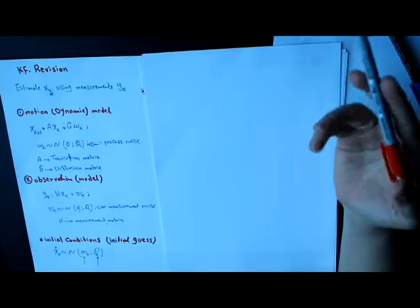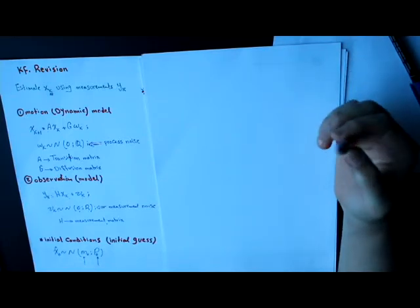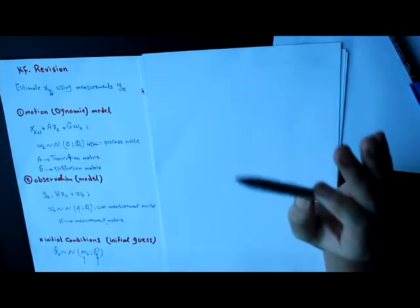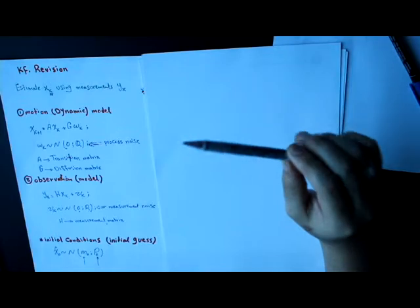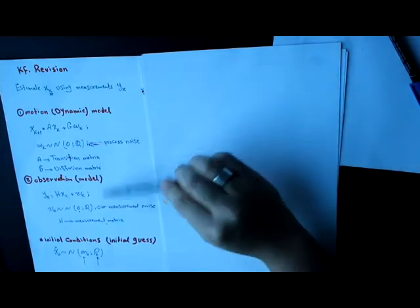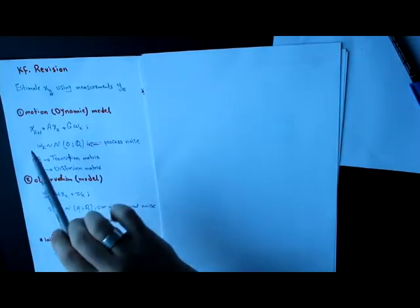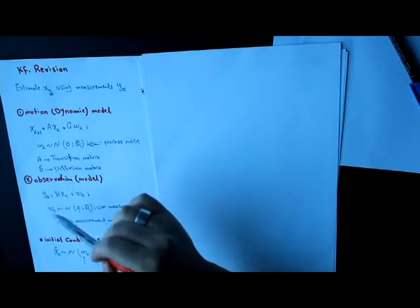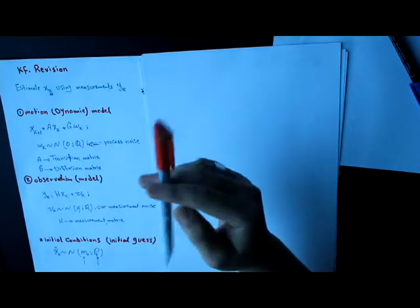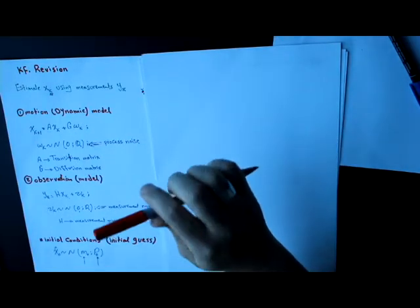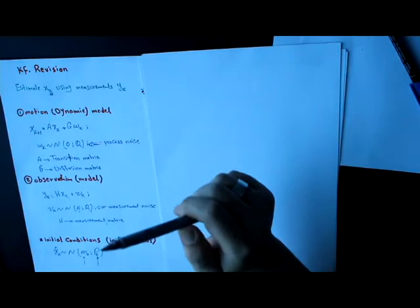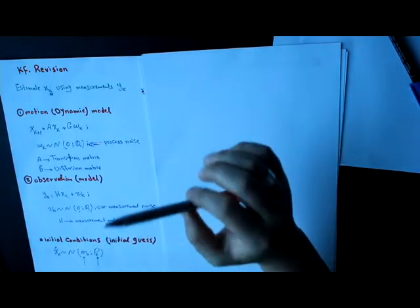Hello. In previous videos we have discussed the Kalman filter. One important thing that we need to notice about the Kalman filter is that it works only with linear models — a linear motion model and a linear observation model. But actually these linear models are rare in real life, and most of the models are nonlinear. That's why we need a new version of the Kalman filter which is called the extended Kalman filter.